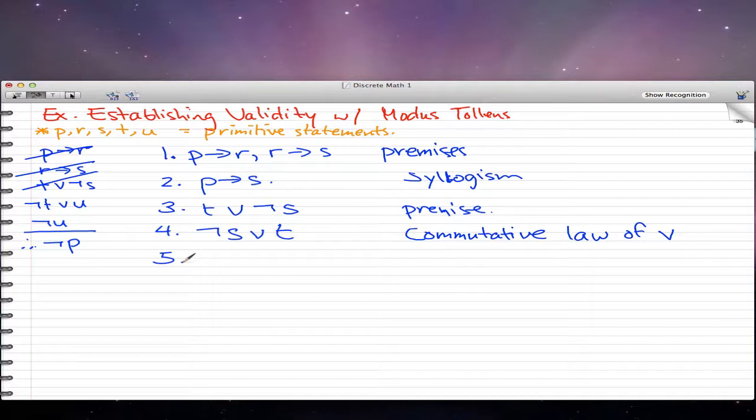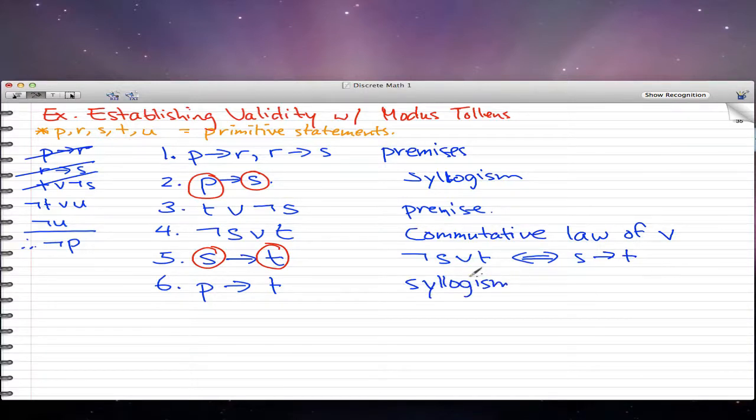The fifth step, what we have here is s implies t, because we know that negated s or t is logically equivalent to s implies t. So what we have now is, remember that we still have this p implies s. Now we have s implies t. So we can use syllogism again. We can use syllogism to get p implies t, because p implies s and s implies t. We can just cut out the middleman, p implies t, that's syllogism.